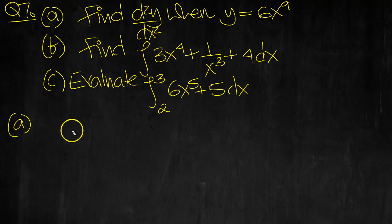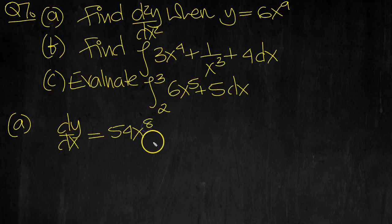So A, differentiate dy/dx. Power rule: 9 comes down, 9 times 6 is 54, x to the 1 less, which is 8.